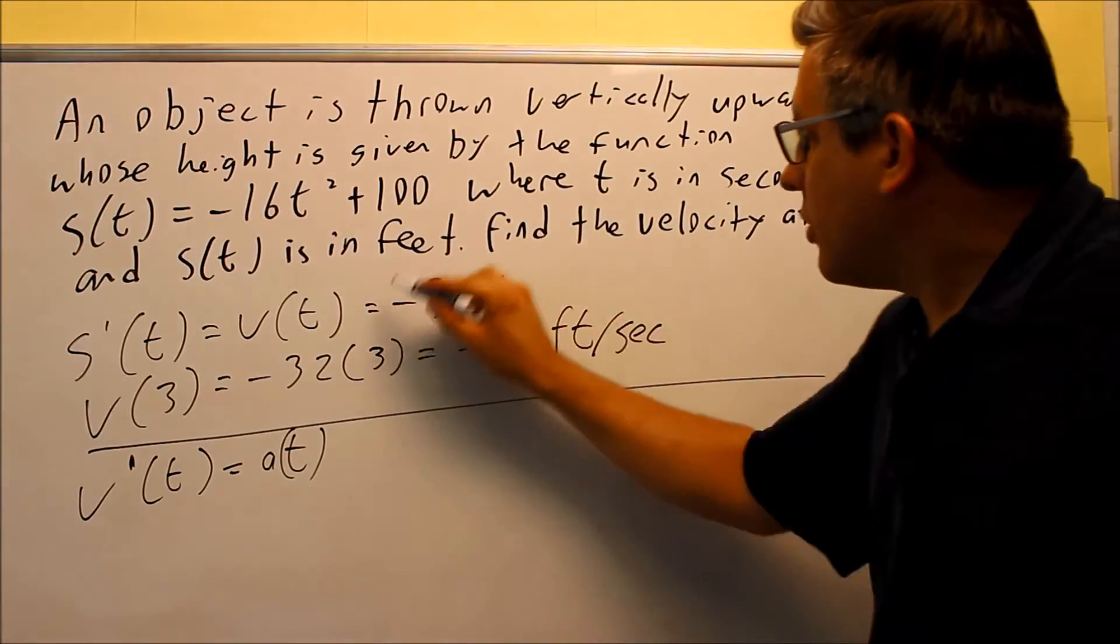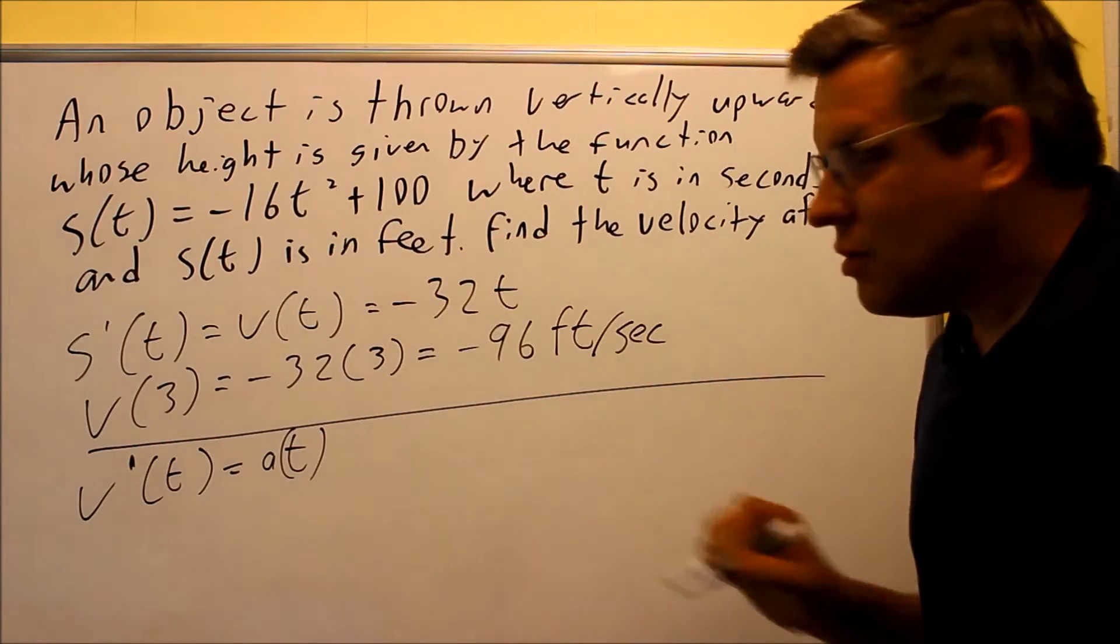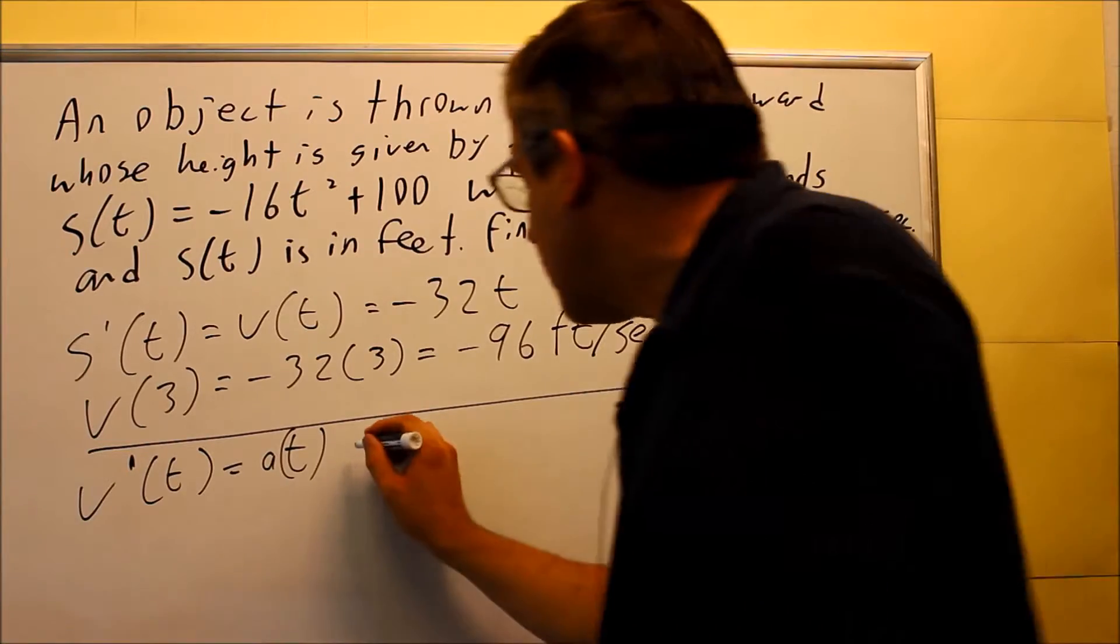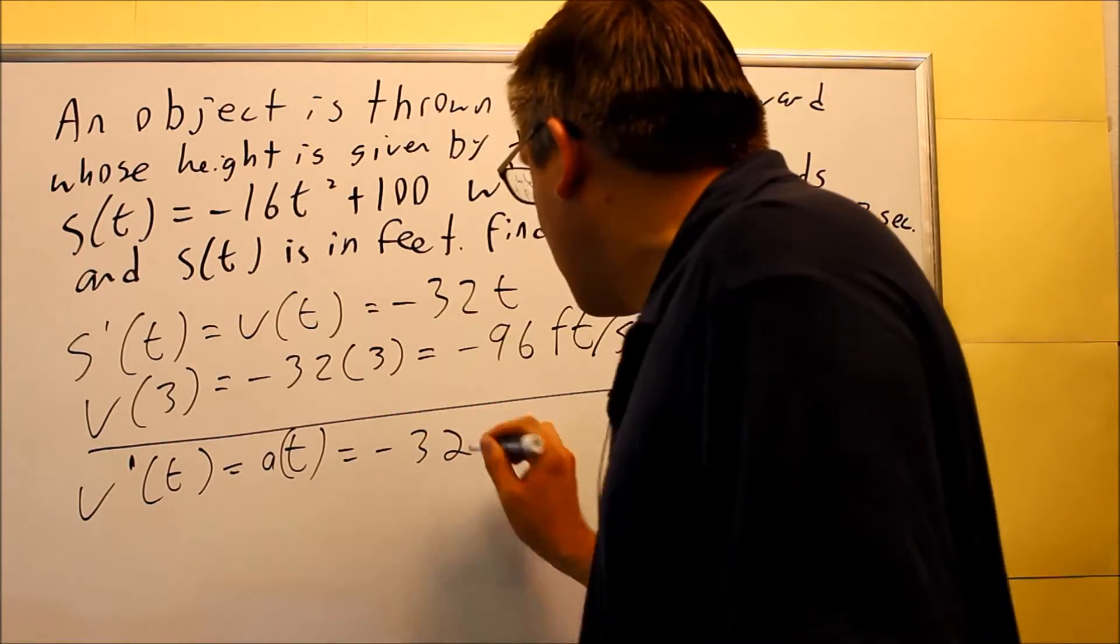To do that, we're going to take the derivative of velocity. The derivative of this one, negative 32t, is just going to be negative 32.